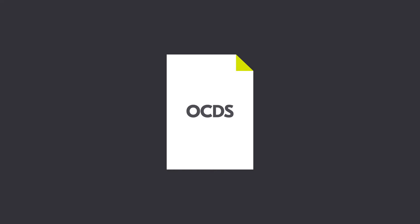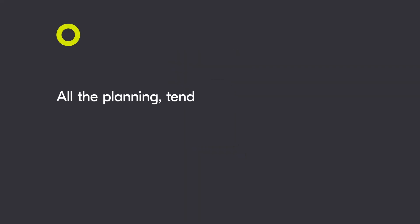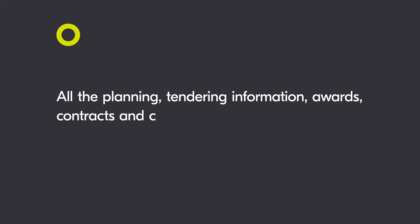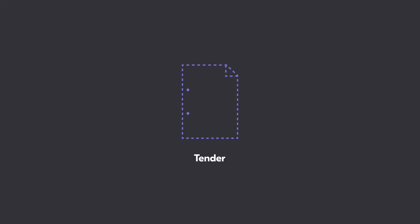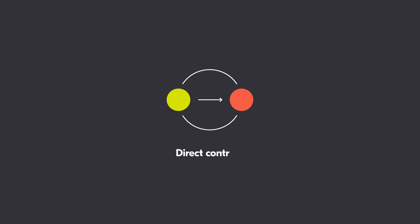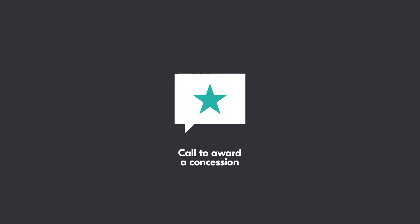The Open Contracting Data Standard defines a contracting process as all the planning, tendering information, awards, contracts and contract implementation information related to a single initiation process. That initiation process can be a tender, a direct contract award, or a call to award a concession.